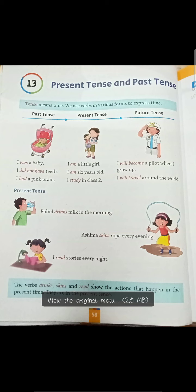In present tense: I am a little girl. I am 6 years old — right now I am 6 years old. I study in class 2nd — I am in class 2nd.